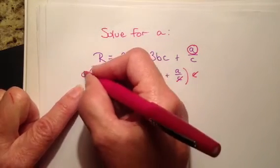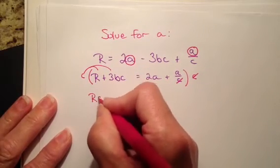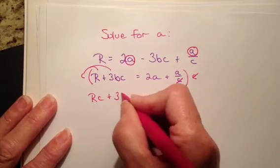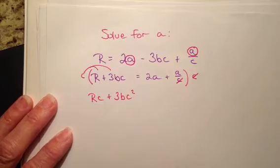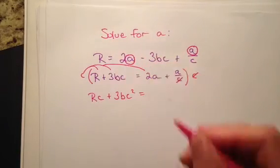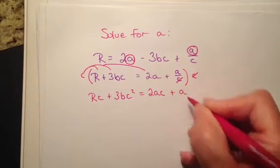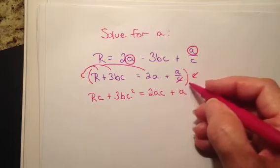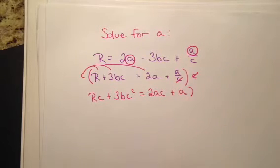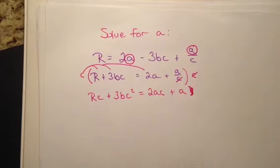So let's start over on this side, and I have to distribute the C. So I'm going to have RC plus 3BC squared on that side equals, don't forget to keep distributing the C over here, so this is going to become 2AC plus A. Because now that's not going to have a C anymore because the denominator cancelled. Okay, so now we're getting close.